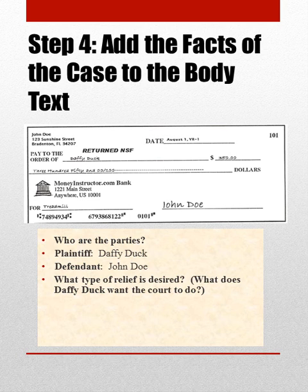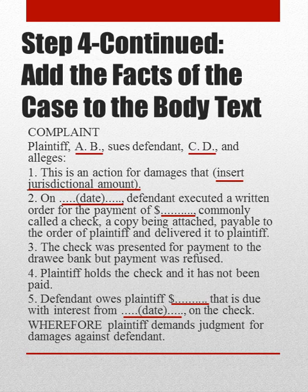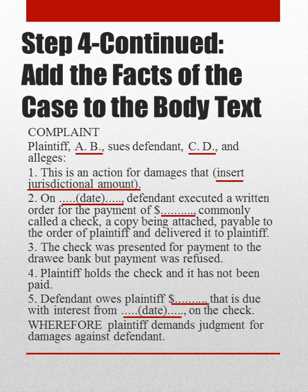What kind of relief — that means what damages — does Daffy Duck want? What does she want the court to do for her? She wants the court to order John Doe to pay Daffy Duck the money that John Doe owes her for the treadmill, plus any other damages such as service fees, attorney fees, etc. So we've copied that information and critically thought about what types of variable data go into the form.